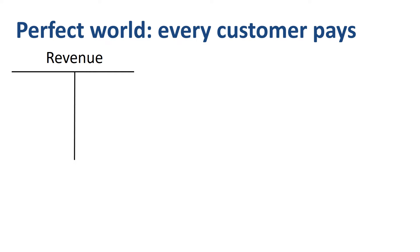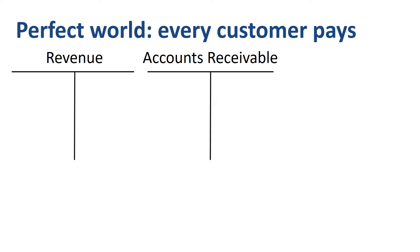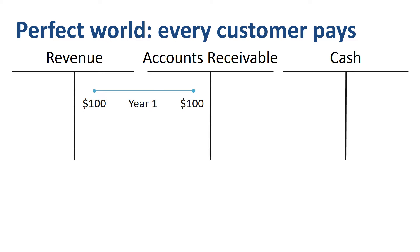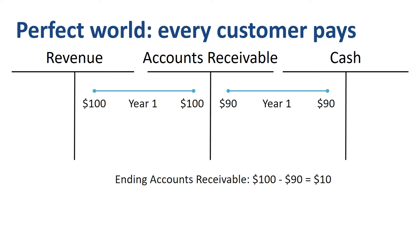Revenue in the income statement, accounts receivable on the balance sheet, and cash on the balance sheet. If ABC Company bills $100 in revenue to customers in year one, and customers pay $90 of this $100 during that same year one, then the ending outstanding accounts receivable balance at the end of the year is $10.